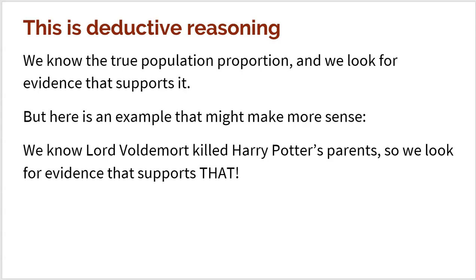Let's put a cap on this and look backward. Everything we've done so far has been deductive reasoning — we know the true population proportion and we look for evidence that supports it. Here's an example: we know Lord Voldemort killed Harry Potter's parents, so we go out and look for evidence that supports that. We knew the true proportion P was right in the middle, and then we could collect samples that either support that, or samples that are significant and go against it.